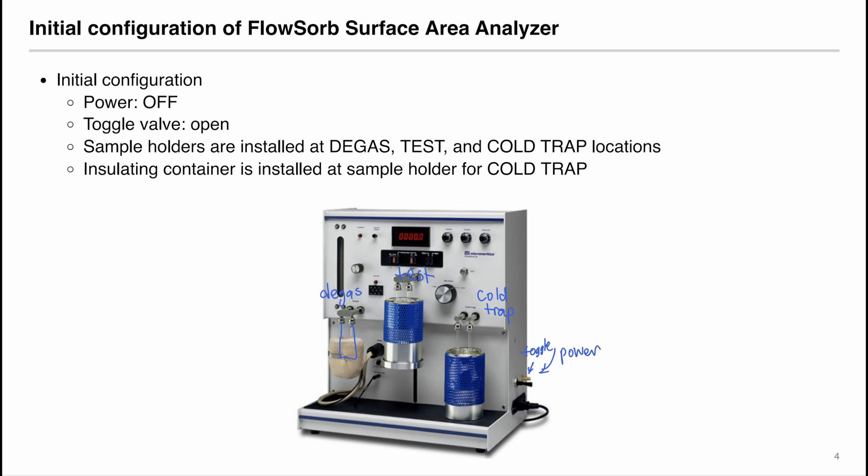When you're in the lab, you'll see that the insulating container is installed only on the sample holder for the cold trap. And this thing here is a thermal pad that will generate heat, so that the gas within the sample holder will come out. After making sure that the configuration is as described, we can then start our experiment.